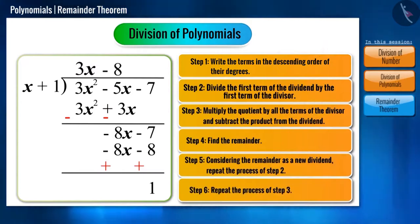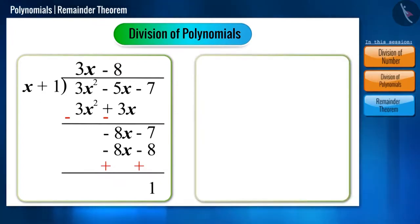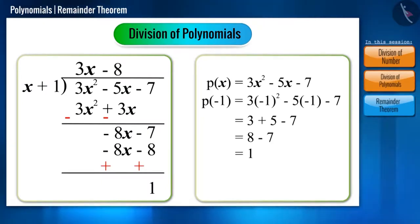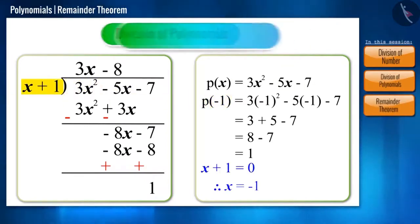Now, let's find p of minus 1 for the polynomial p of x is equal to 3x squared minus 5x minus 7. We got 1 as the remainder which is the same as what we got by the division method. And where did we get this minus 1 that we substituted in the polynomial? We got that from the divisor. And this is the remainder theorem.